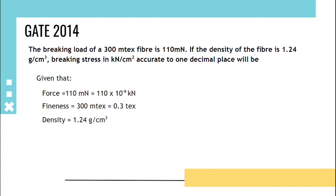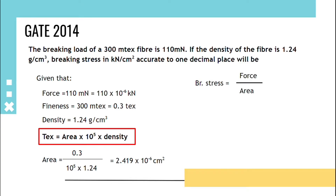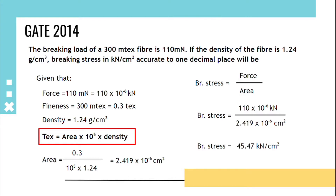With the given data, we arrive at area by using the formula: tex = area × 10⁵ × density. So area will be 2.419 × 10⁻⁶ centimeter square. We know that stress equals force upon area; breaking stress is also calculated that way. Substituting force and area in the formula, we get the breaking stress value as 45.47 kilonewton per centimeter square.